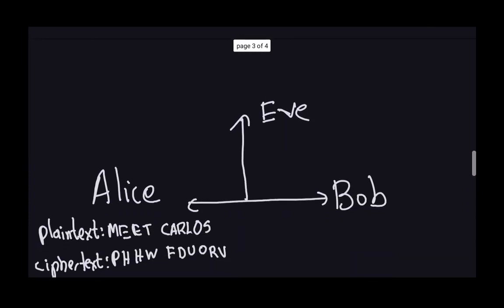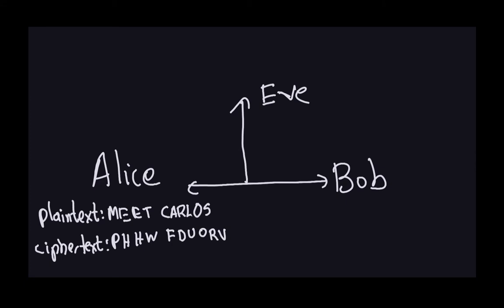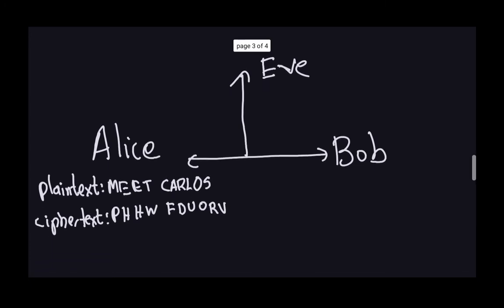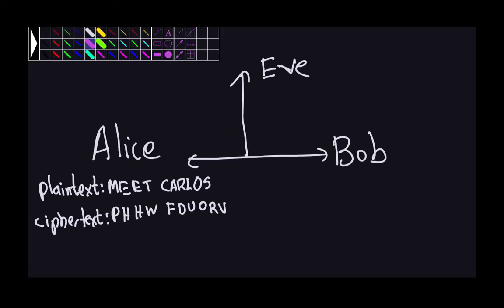Here is the setup. In the very first example, we had Alice wanting to communicate with Bob through an insecure channel, while Eve was always listening to every message they were sending. Alice wanted to send the message 'meet Carlos' to Bob through the insecure channel. The ciphertext is the collection of letters P-H-H-W-F-D-U-O-R-V. That ciphertext M is what gets sent through the insecure channel to Bob, and of course, Eve also receives the message.